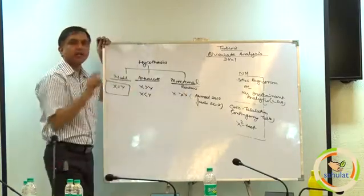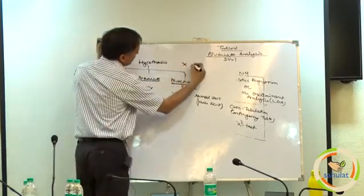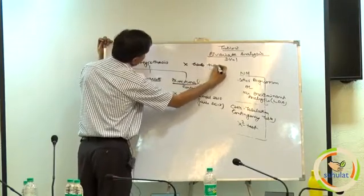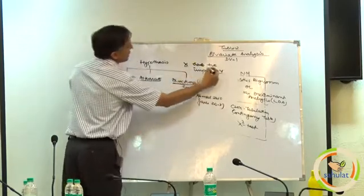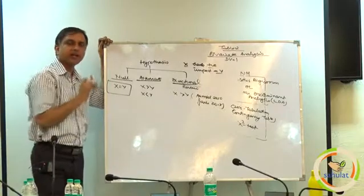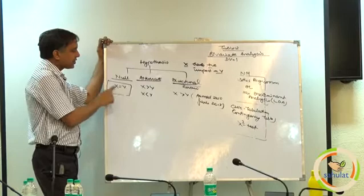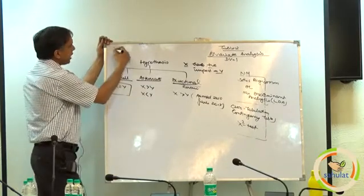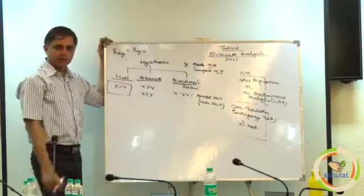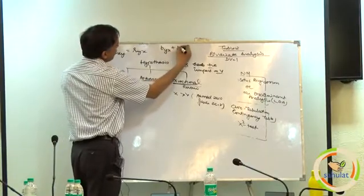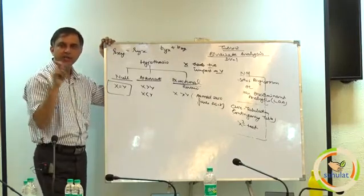Directional means specifying a direction. Saying x is not related with y is null. Saying x has a positive impact on y — meaning as x increases, y increases — that is called directional, specifying a direction. We must tell which is dependent and which is independent. Remember, r between x and y is the same as r between y and x, but b(y,x) is not equal to b(x,y) — those are two regression coefficients. There are two regression lines: regression line of y on x, and x on y.